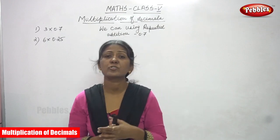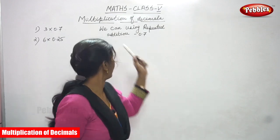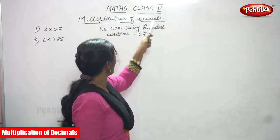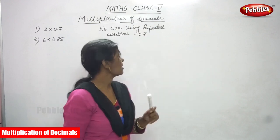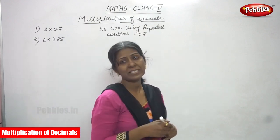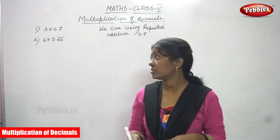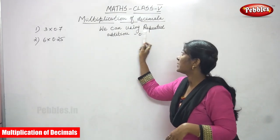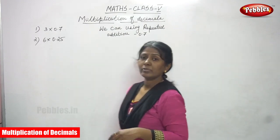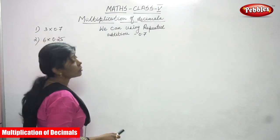Hi, welcome all to Pebbles. In today's class we are going to see multiplication of decimals. Multiplication is a repeated addition — otherwise we can call it as a repeated addition. So we can use repeated addition for decimals also. First we are going to look at the sum. Let's start the class: 3 into 0.7.